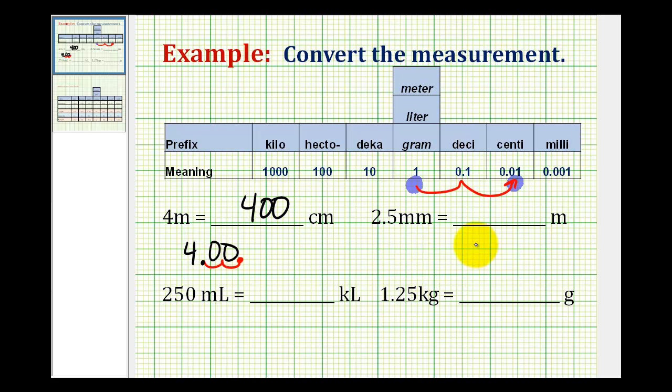In the next example we want to convert 2.5 millimeters to meters. So millimeters would be in this column here with the prefix milli. We want to convert this back to the basic unit of measure meter. And since a millimeter is 1,000th of a meter, we could just divide by 1,000.